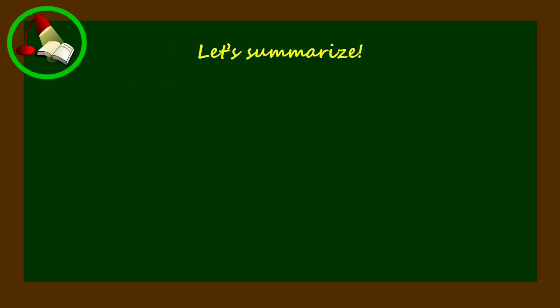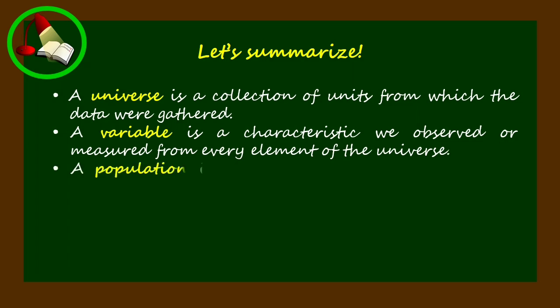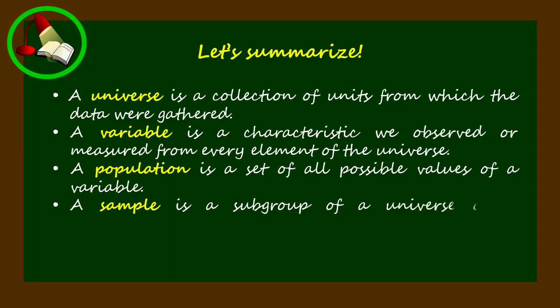Let's summarize what we have previously discussed. A universe is a collection of units from which the data were gathered. A variable is a characteristic we observed or measured from every element of the universe. A population is a set of all possible values of a variable. A sample is a subgroup of a universe or a population.